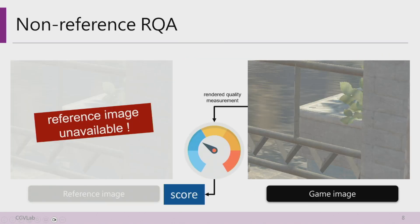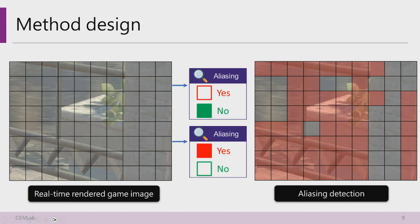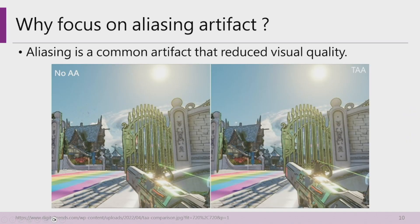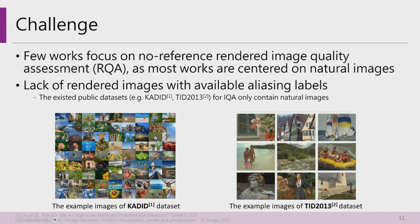Therefore, we need to indicate the quality of a rendered image without a reference image, which is the non-reference RQA task. To solve this, we define the rendered image into different tiles and determine the quality of each tile through aliasing detection. The number of aliasing tiles indicates the image quality. We focus on aliasing because it is a common and major issue in rendered images. Non-reference RQA research is limited, and no public labeled dataset exists for this task.